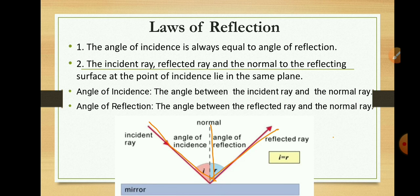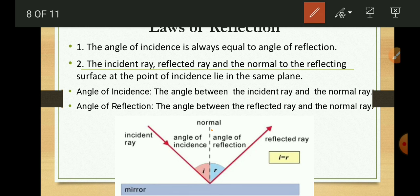These laws of reflection are applicable to all types of reflecting surfaces — plane, spherical, regular, or irregular. A ray of light which is incident normally on a mirror is reflected back along its own path. In this case, the angle of incidence is equal to the angle of reflection, which is equal to 0. So if a ray of light is incident normally, both the angle of incidence and angle of reflection are 0.